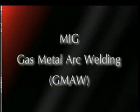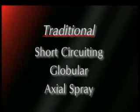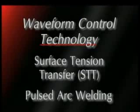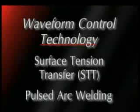Five basic types of gas metal arc transfer methods will be reviewed. First are the three traditional constant voltage or CV processes: the short-circuiting process, globular transfer, and axial spray arc. The fourth and fifth modes of transfer are higher-level technology transfers — surface tension transfer and power wave pulsed arc transfer — both further enhanced by waveform control technology.